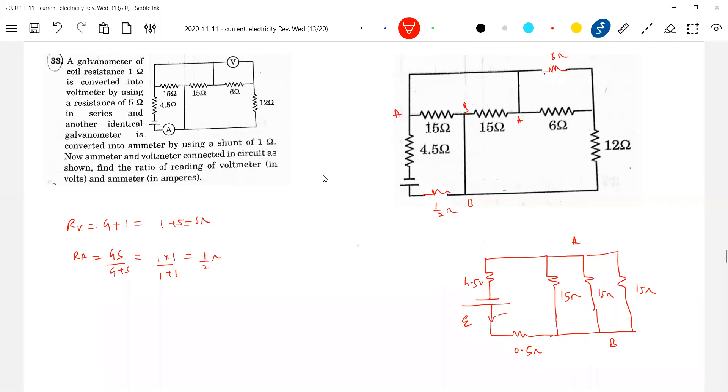So the current here, let it be I. So 15, 15, 15, 5 ohm. I is equal to E by 5 ohm, 5 ohm, 10 ohm. E by 10. Correct? This will be 5, 5, 5, 10. Yeah, I will be E by 10.